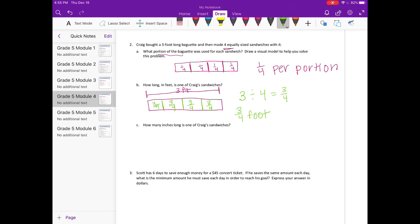Part B: How many inches long is one of Craig's sandwiches? First we need to think about our foot to inch ratio. There are 12 inches in one foot. So if we're taking our inches and making it into feet, we can use our equivalent fraction to do that. So three fourths, I'm going to turn that into twelfths to see how many inches we would have.